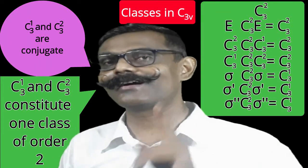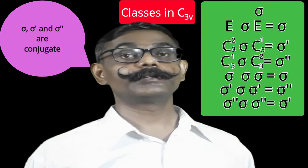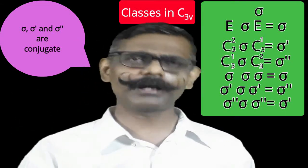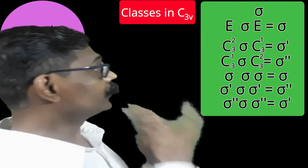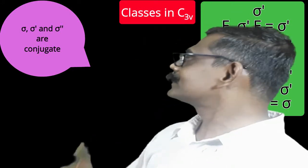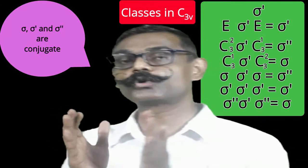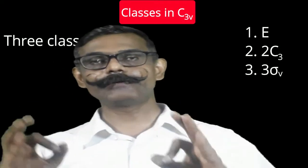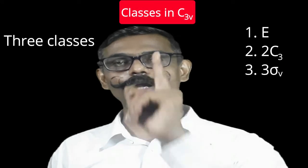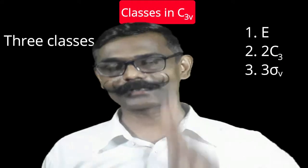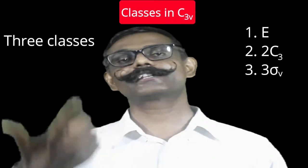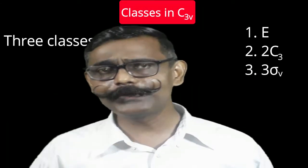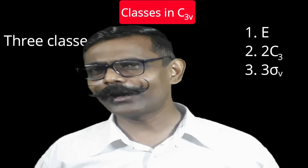Similarly, finding similarity transforms of sigma through all operations — identity, C3¹, C3², sigma, sigma-dash, and sigma-double-dash — gives the result that sigma, sigma-dash, and sigma-double-dash are all conjugate to one another. So these three vertical planes form one class of order three. In C3v there are three classes total: {E}, {C3¹, C3²}, and {σ, σ', σ''}.